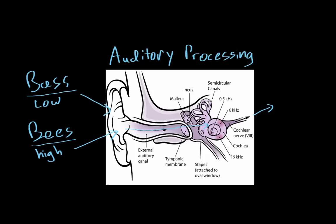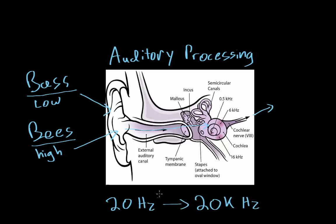Your brain needs to be able to distinguish between sounds of varying frequencies. You're actually able to hear things with a frequency of 20 Hertz all the way up to a frequency of 20,000 Hertz. This is a huge range, and in order to distinguish between sounds of low and high frequencies, the brain uses the cochlea, and particularly something known as basilar tuning.